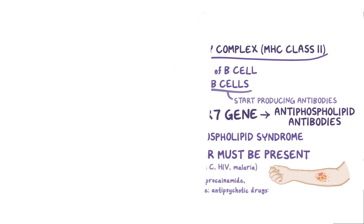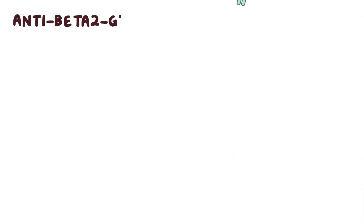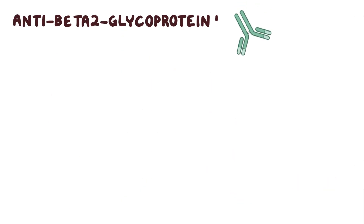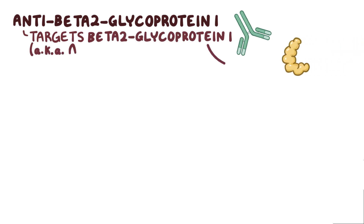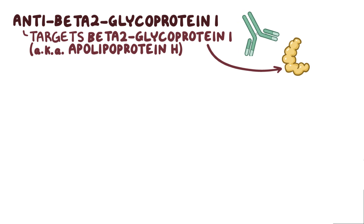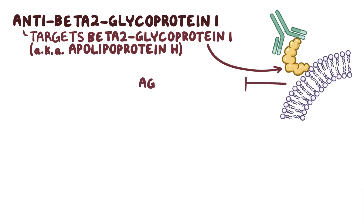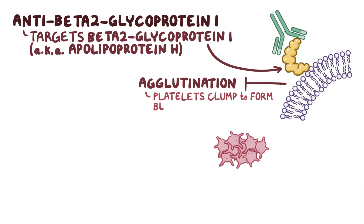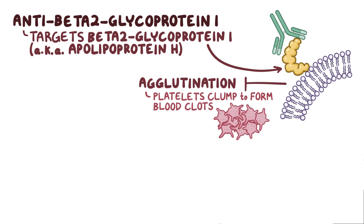The main antiphospholipid antibody is anti-beta-2-glycoprotein-1, which targets the protein beta-2-glycoprotein-1, also called apolipoprotein-H. This protein binds to phospholipids and inhibits agglutination, which is when platelets clump together to form blood clots. So when anti-beta-2-glycoprotein-1 binds beta-2-glycoprotein-1, it's not free to do its job, and that leads to clot formation.